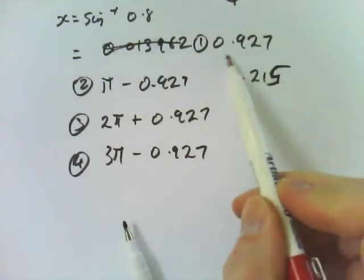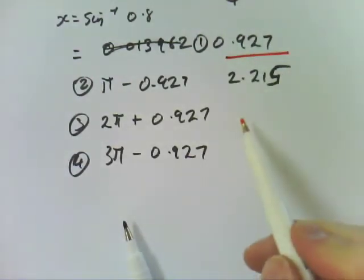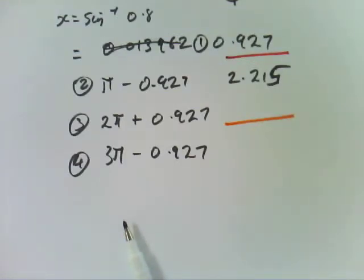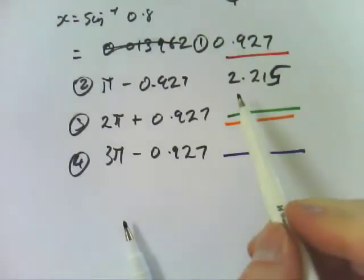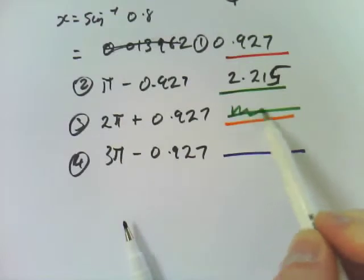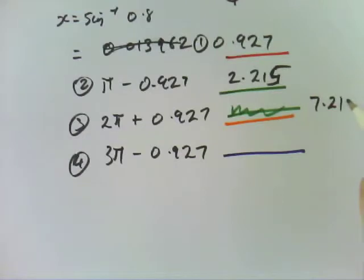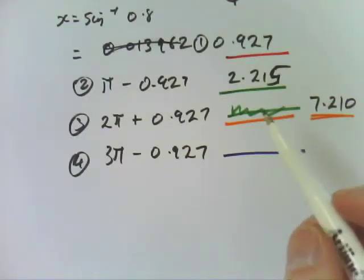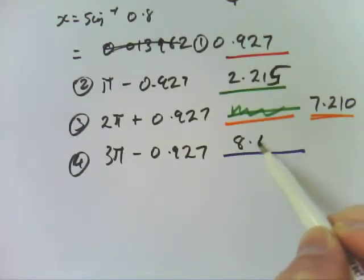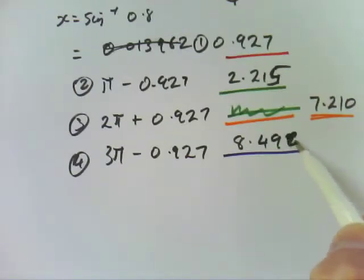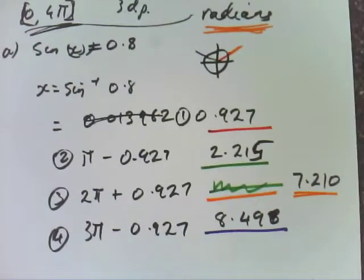That's the red on my thing, that'll be orange. That green one is supposed to be there. This one was 7.210. And that's orange. 8.498. So that's how easy that is.